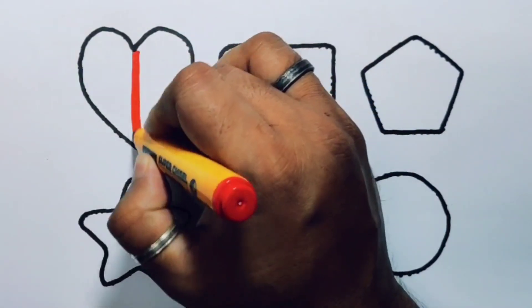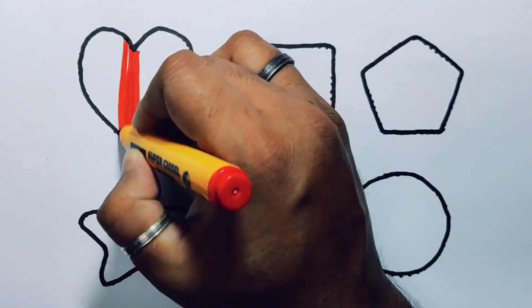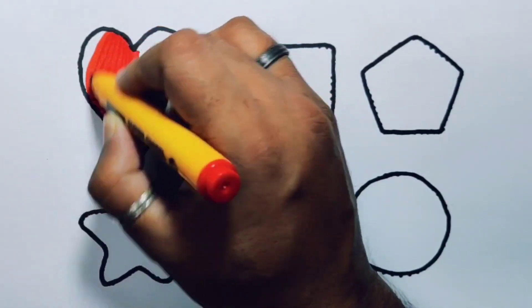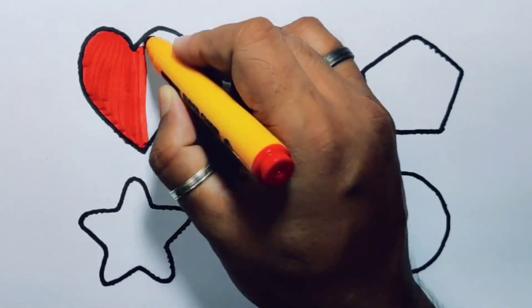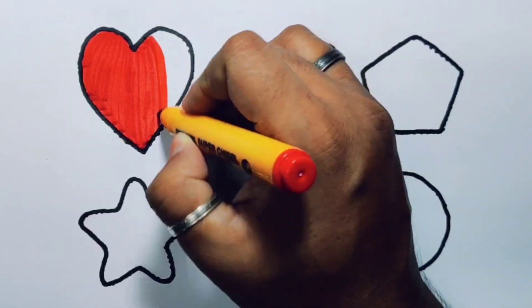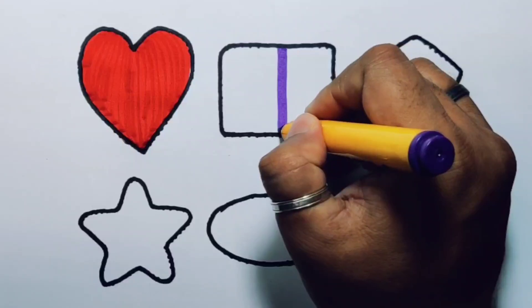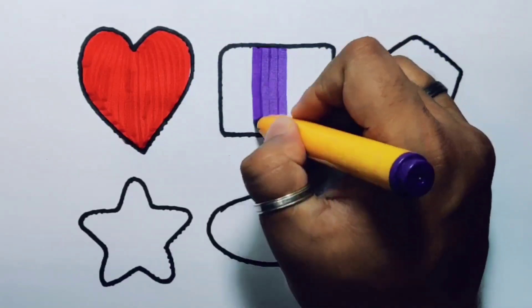Now I'm going to put the color. Red color heart. Purple color rectangle.